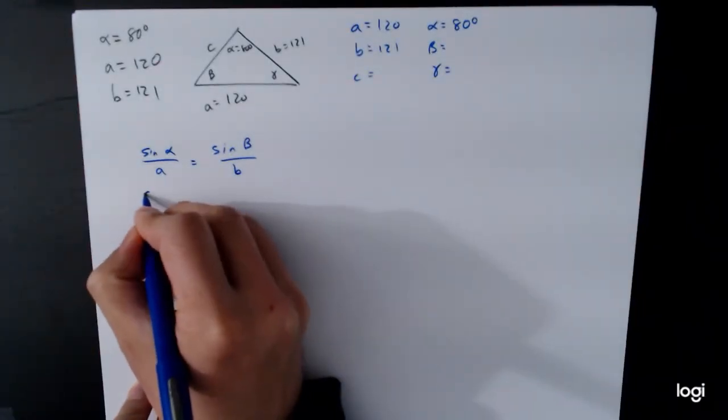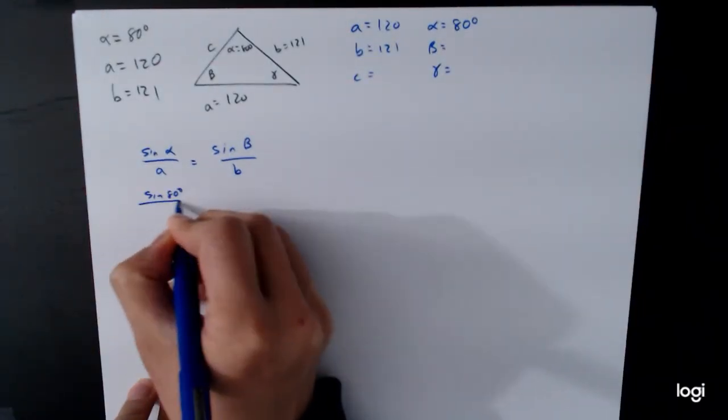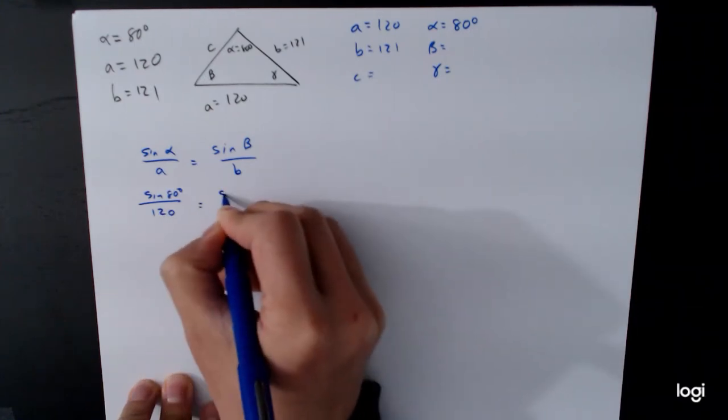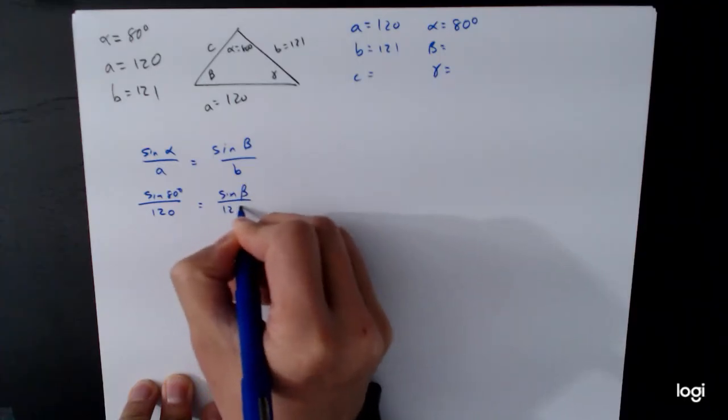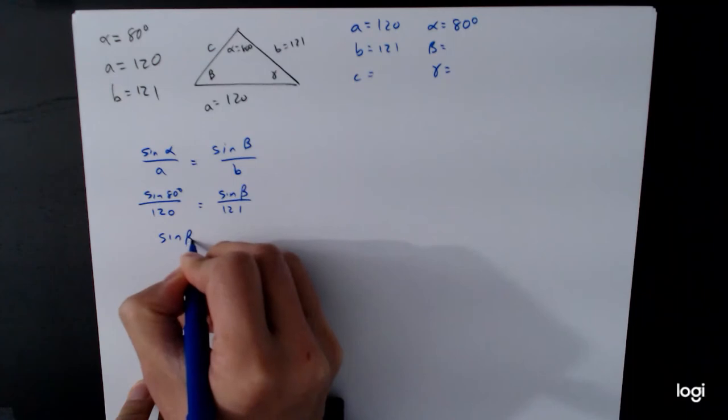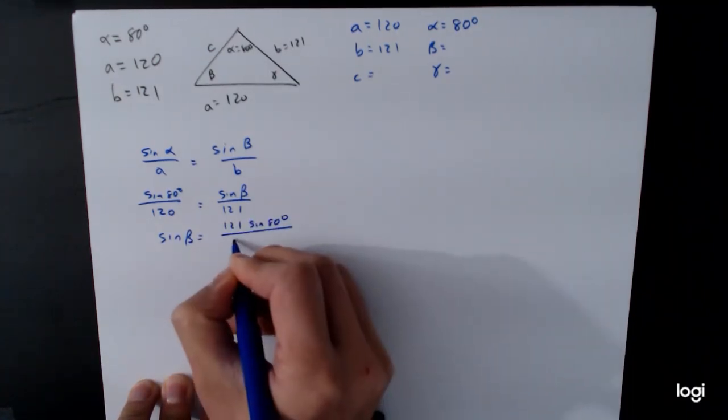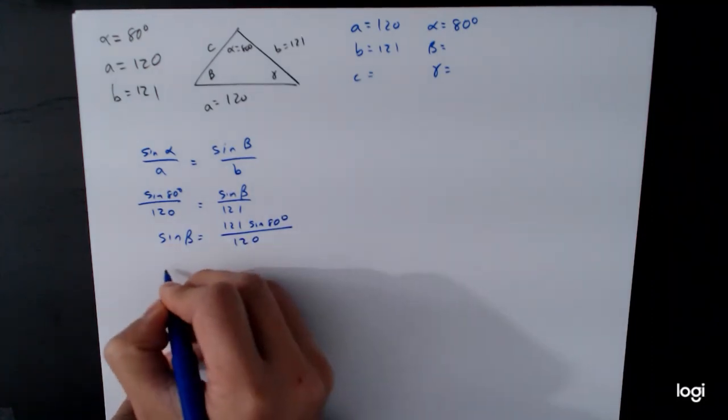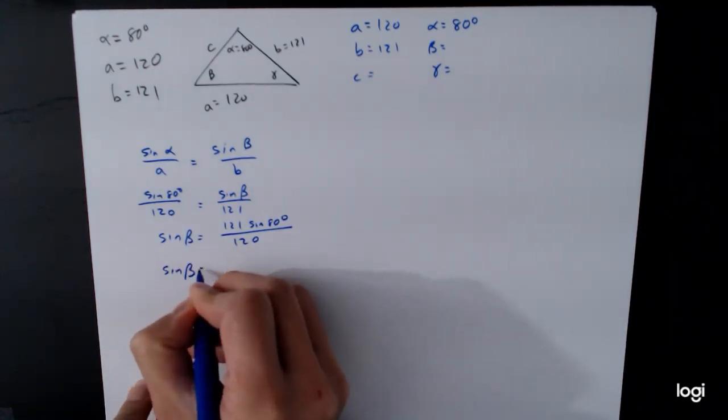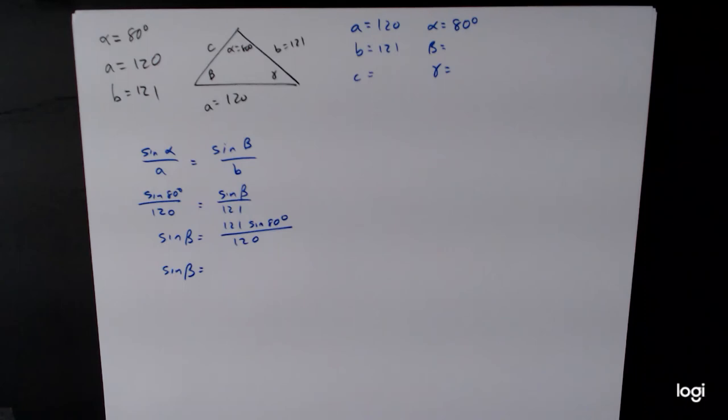Sine alpha over A is sine beta over B. So when we plug in our values, sine of 80 degrees over 120 is equal to sine of beta over 121. Sine of beta is equal to 121, sine of 80 degrees over 120.